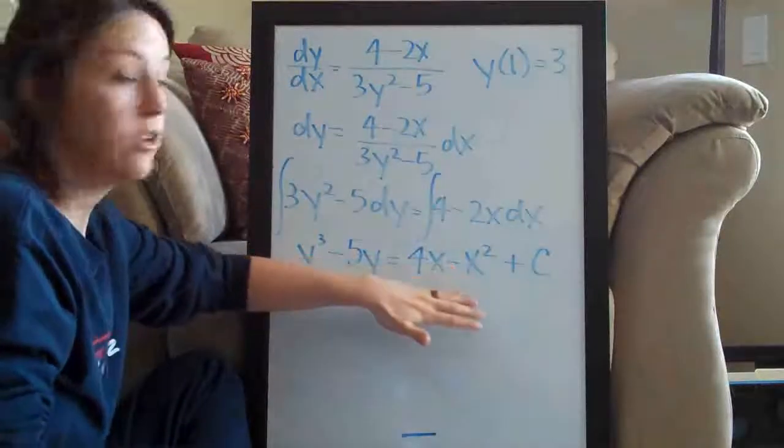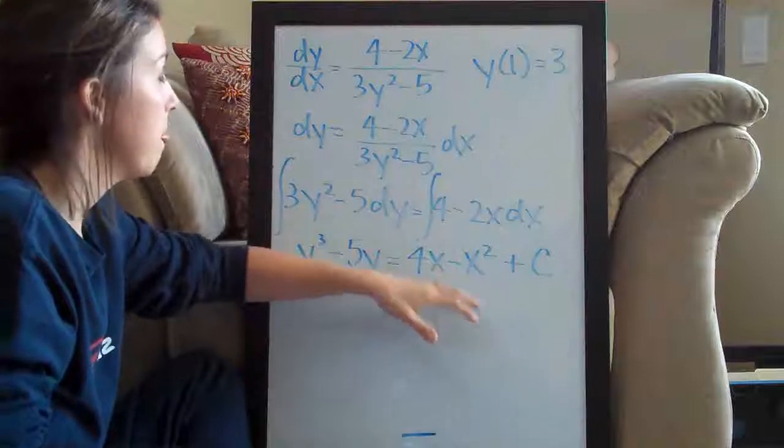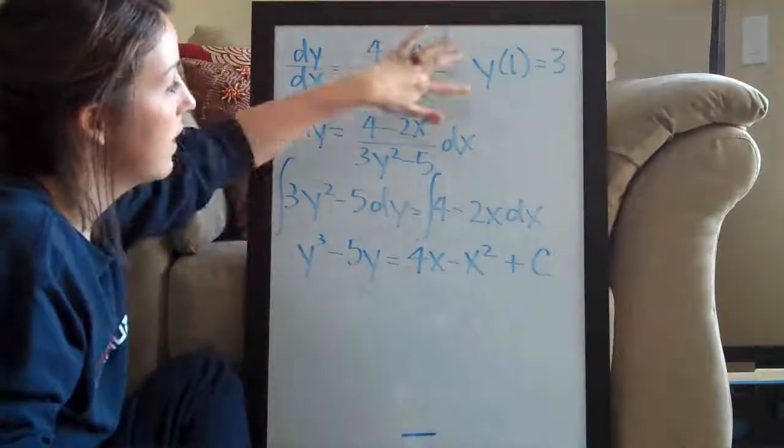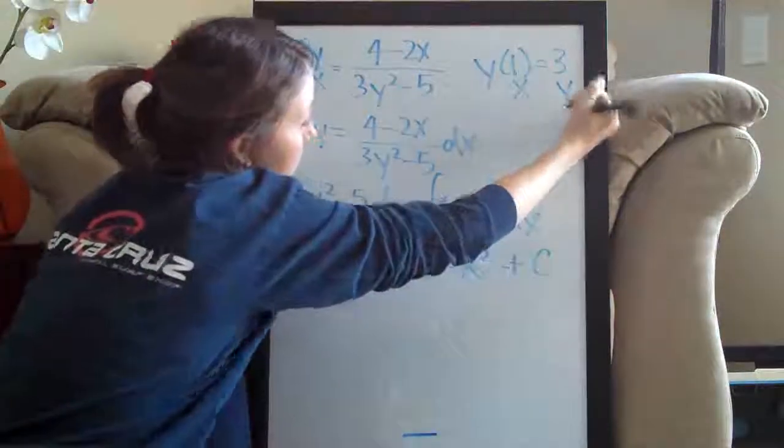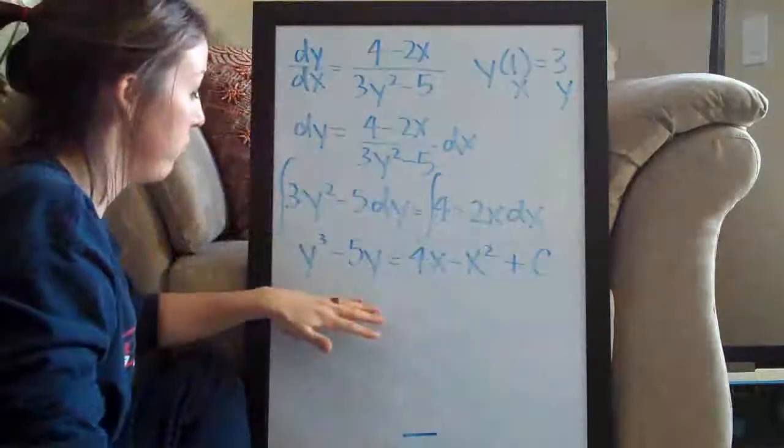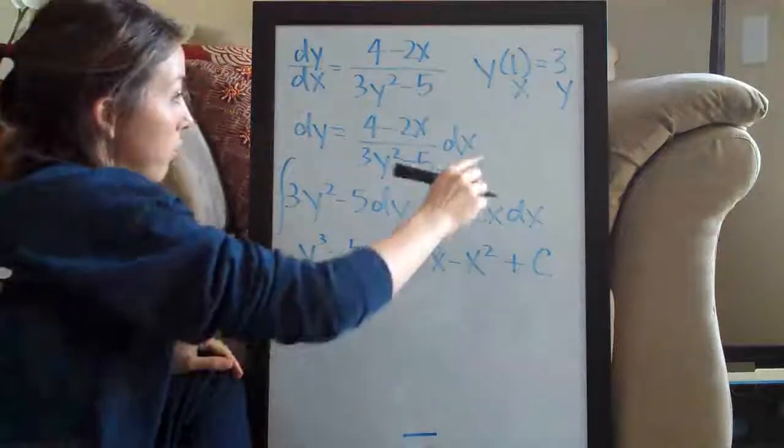The third step is going to be plugging in the values from the initial condition, 1 for x and 3 for y into our function here. So let's go ahead and do that.